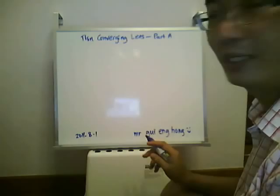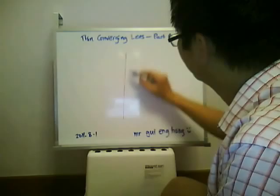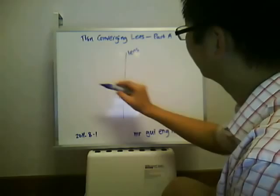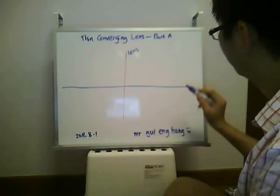Hello, today we're going to learn the Thin Converging Lens Part A. This is the lens. This vertical line represents the thin converging lens. Now we call this line the principal axis.